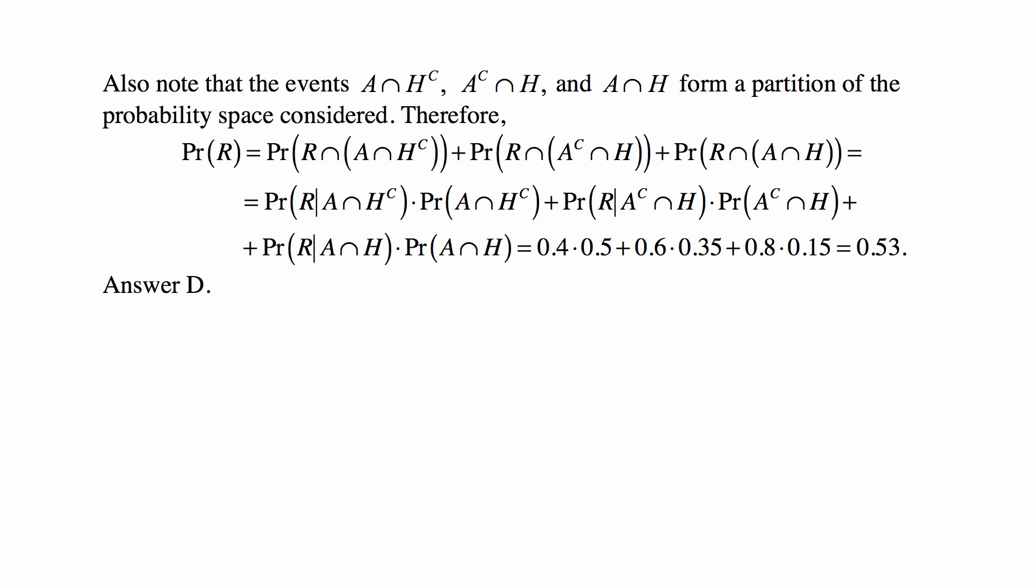The probability of R is the probability of R intersection the first set plus R intersection the second set plus R intersection the third set, from the partition of the space. That equals Pr(R | A ∩ H^c) × Pr(A ∩ H^c) + Pr(R | A^c ∩ H) × Pr(A^c ∩ H) + Pr(R | A ∩ H) × Pr(A ∩ H). All of the probabilities that we're using here are given, so we just plug it in and we get 0.53, which is answer D.